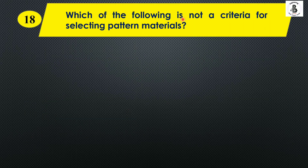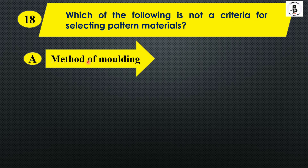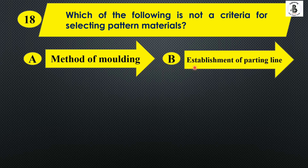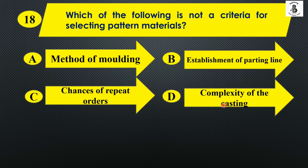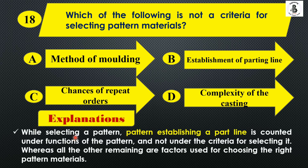Which of the following is not a criteria for selecting pattern materials? Option A: first method of molding, Option B: establishment of parting line, Option C: chances of repeat orders, and Option D: complexity of castings. While selecting a pattern, establishment of the parting line is counted under the function of patterns and not under the criteria for selecting it. All other remaining options are factors used for choosing the right pattern materials. So the right answer is Option B.